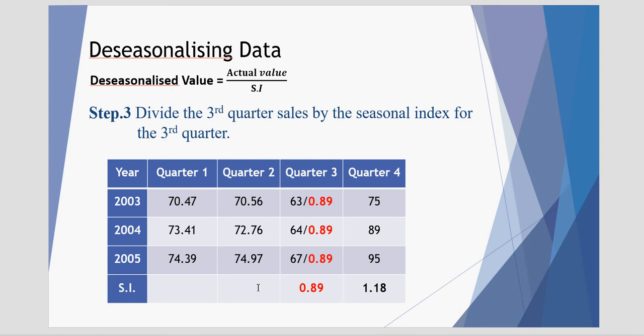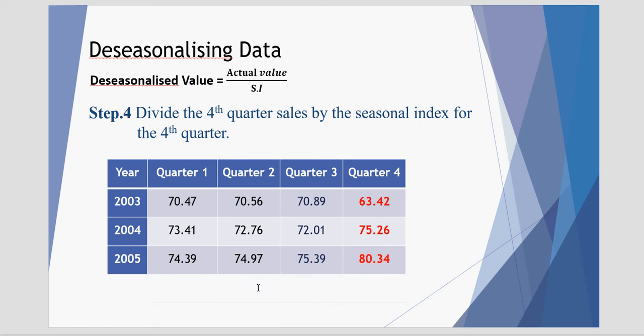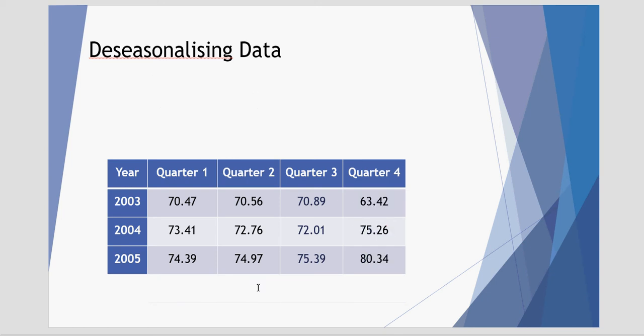Quarter 3, we divide each of those values by the seasonal index for quarter 3 of 0.89. Get the following values. The same for quarter 4 with the seasonal index of 1.18. And there's the quarter 4 seasonal index. That is our deseasonalized data.